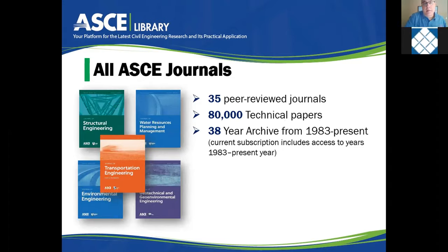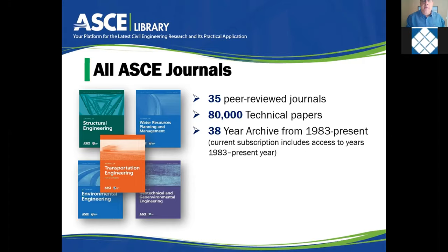Journals are the major part of our website and platform. We have 35 journals and this is where you'll find the peer-reviewed content of the ASCE library. A nice part of a current subscription, which your library has, is that it includes content from 1983 to the present — a 38-year archive of content. We just this month digitized and put on the platform our earlier content, which is a different purchase. A current subscription includes almost four decades of content.